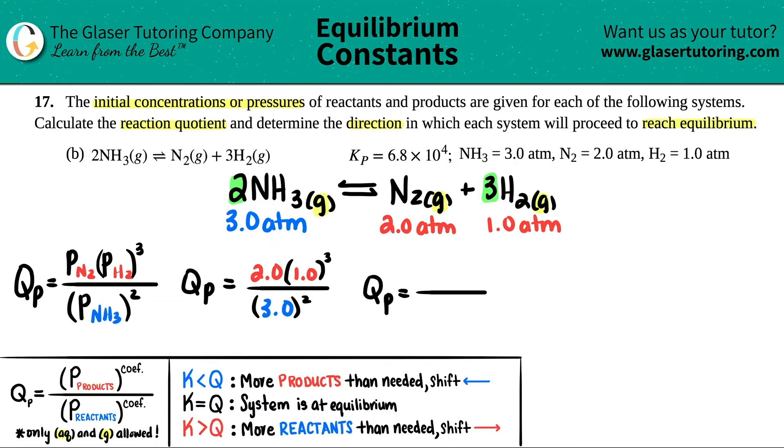The top number is just going to be 2.0, and the bottom one, three squared is basically nine. Then Qp equals two divided by nine, 0.22 repeating. I'm just going to cut it off after two sig figs because all of these have just two sig figs.